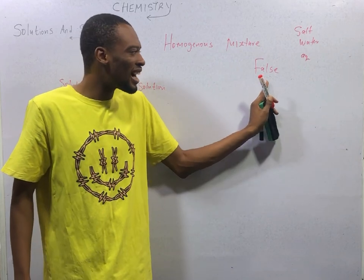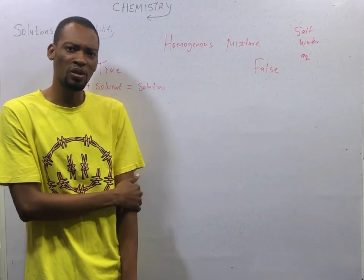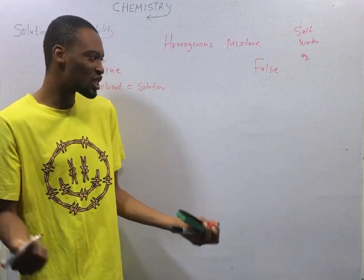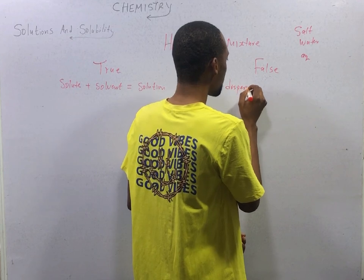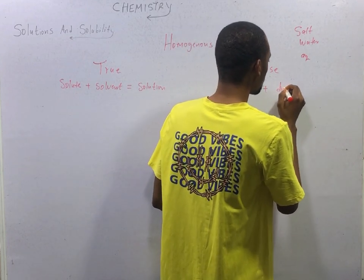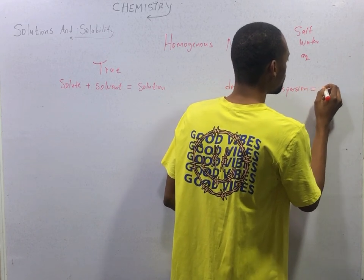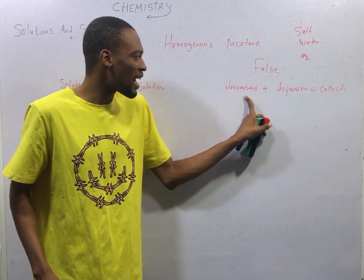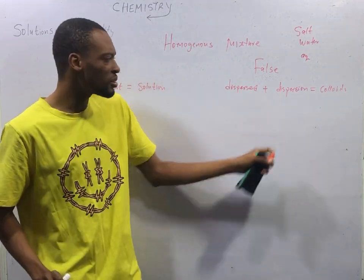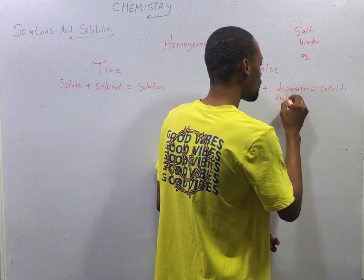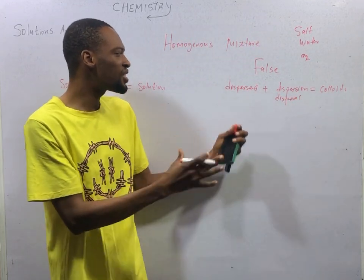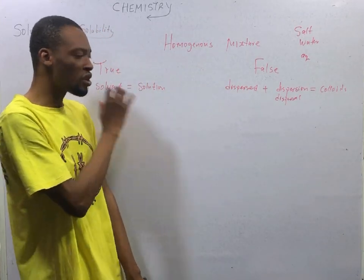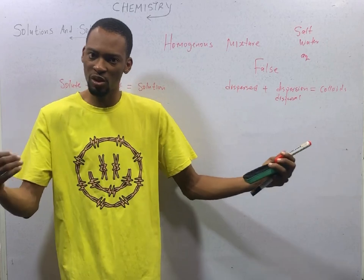A false solution, on the other hand, does not contain solute dissolved in solvent. It contains one substance dispersed in another. False solutions are referred to as colloids. So we have the dispersed medium plus the dispersion medium, also referred to as the dispersal medium. This is a combination of phases. In a colloid, liquid is not always the dissolving medium — it does not require every particle dissolving in liquid.